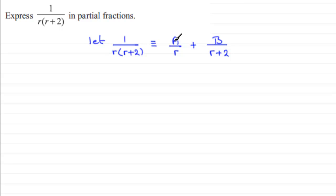Now we need to work out what A and B are and the best way we can do this generally is to always multiply both sides with what you have in the denominator. So if we multiply throughout by r times r plus 2 then what we're going to have here is simply 1.